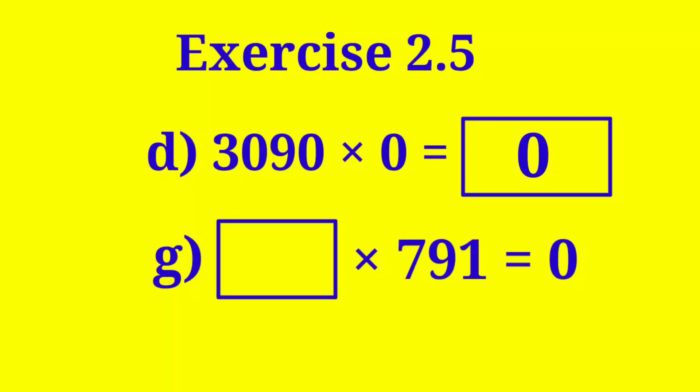Now, dear students, we have learned that when a number is multiplied by 0, the product is 0. So here, we'll write 0 in the box.